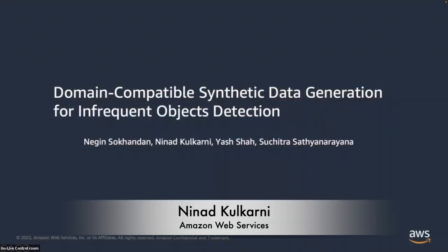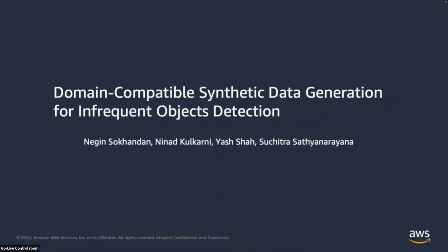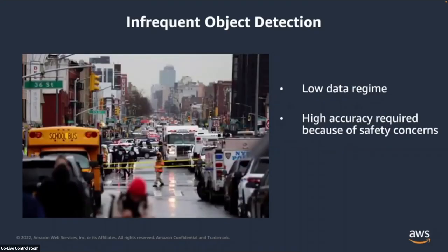Hello, my name is Ninat, and I'm going to present our paper titled Domain Compatible Synthetic Data Generation for Infrequent Object Detection. Detection of domain-specific and infrequent objects can be crucial for many computer vision systems. An example is detection of emergency vehicles for autonomous driving. These emergency vehicles are rarely found in most road scene datasets, so training detection models is a challenging task. Acquiring emergency vehicle data is not straightforward, and a high accuracy of detection is necessary due to safety concerns such as detecting emergency vehicles when their sirens are on.